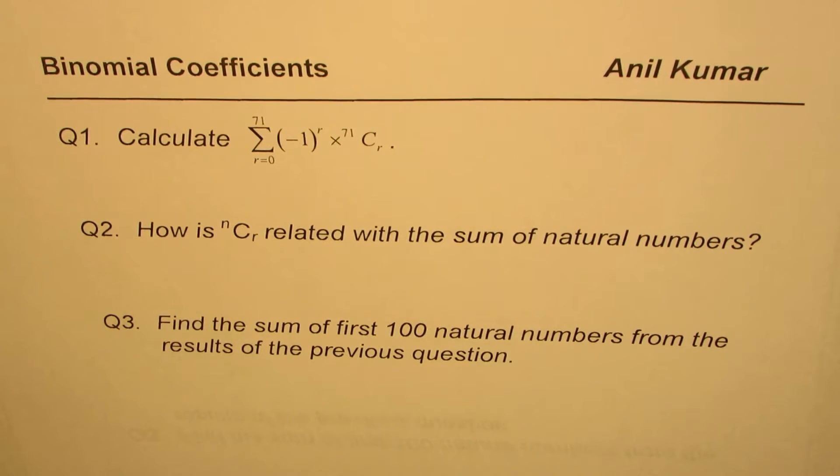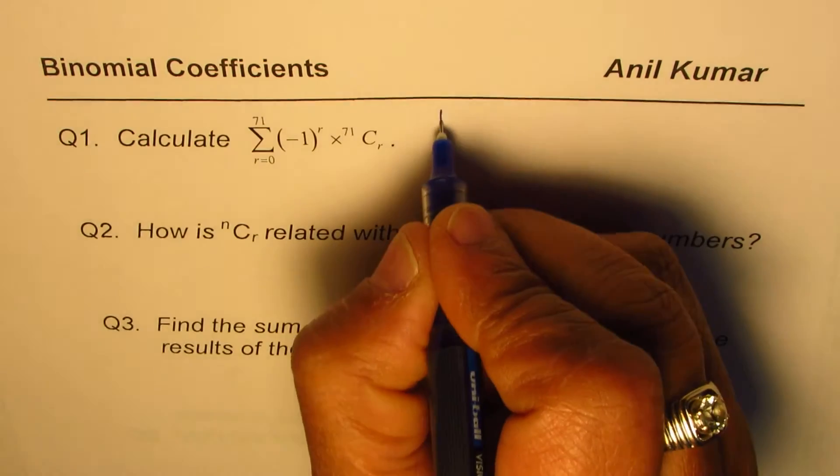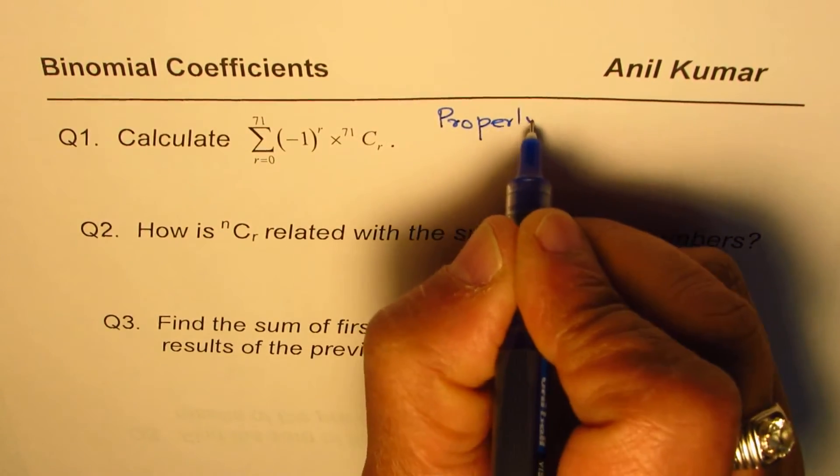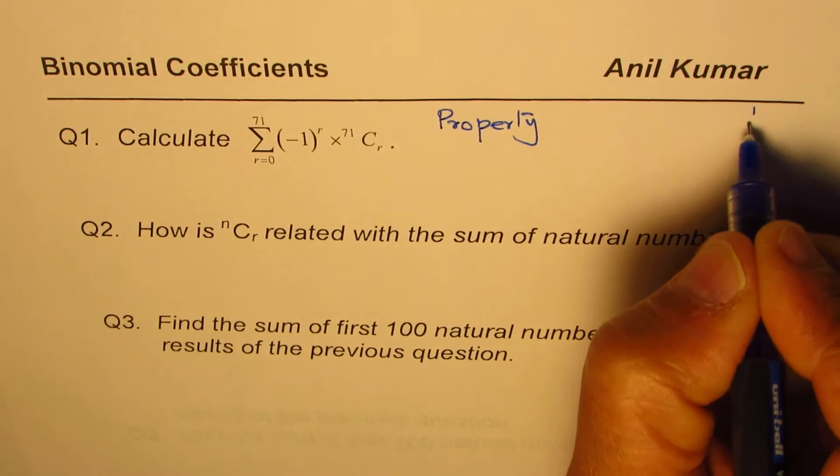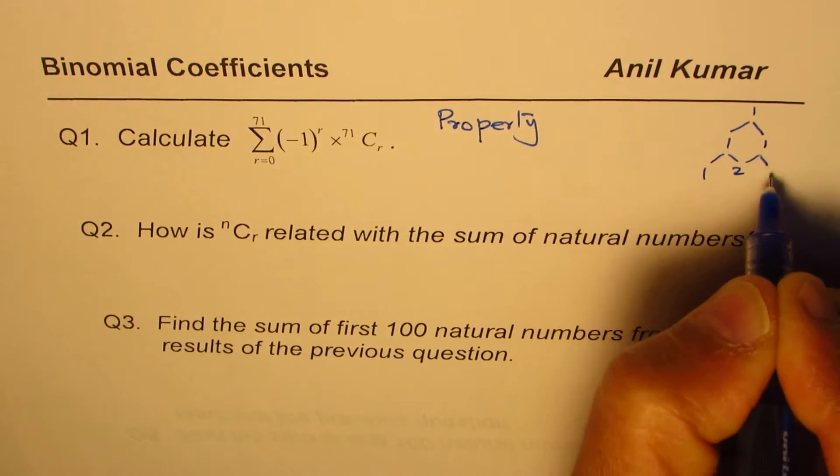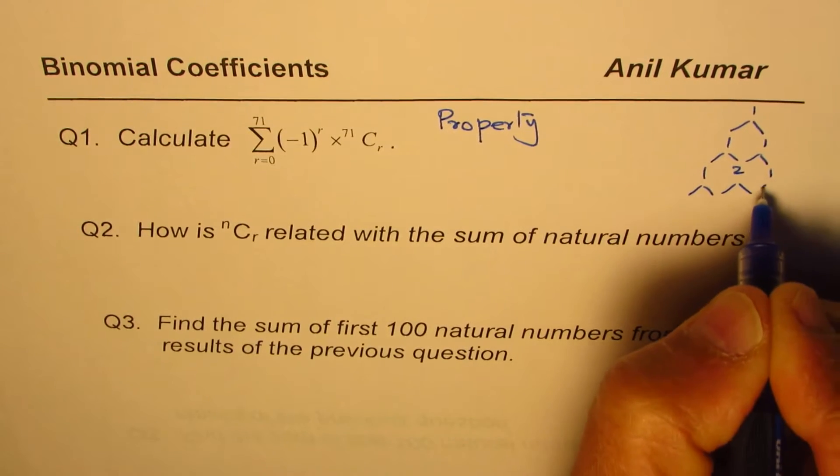Now let's get back to question number one. This is based on property 5. We have learned property 5 for Pascal's Triangle, which gives you the sum. So if you look into Pascal's Triangle, which is kind of like this, let's just review it.